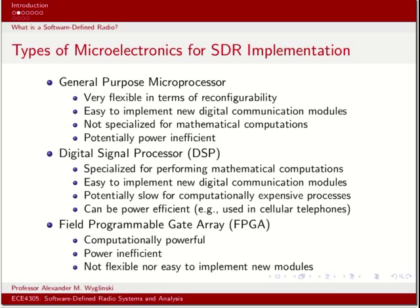The second type is the digital signal processor, or DSP. It has the same accessibility as the general purpose microprocessor; however, a DSP is very well suited to performing mathematical computations and is also power efficient in many applications — including cell phones, which contain DSP chips for filtering and speech processing. On the other hand, DSPs can be computationally expensive and not very fast relative to general purpose microprocessors.